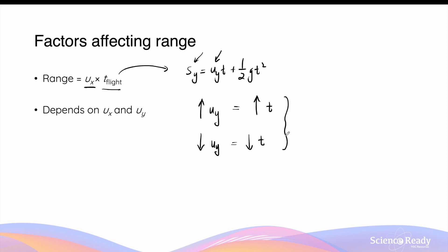Since the initial vertical velocity affects the time of flight, this also affects the range of the object, because range is equal to ux multiplied by the time of flight. The initial vertical velocity, Uy, affects the time of flight directly, which in turn affects the range. Therefore, the range of the object depends on both the horizontal and the vertical components of an object's initial velocity.